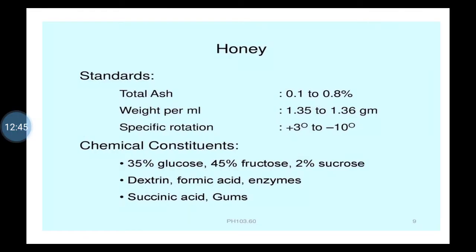Chemical constituents of honey: it mainly contains 35% glucose, 45% fructose, 2% sucrose — these are simpler units of carbohydrates. Polysaccharides when broken into simpler units will be in the form of disaccharides and monosaccharides. Other important contents are dextrin, formic acid, enzymes, succinic acid, and gums. This is the main chemical content of honey.